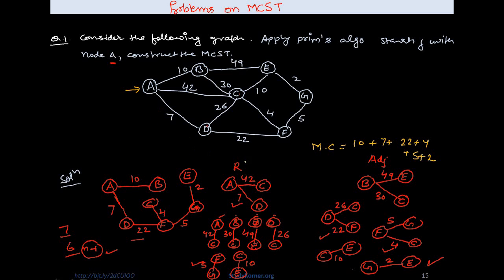In Prim's algorithm I have two sets: the remaining edges set and the adjacent vertices set. Starting with vertex A, I have three adjacent vertices B, C, and D. Among these three, the minimum cost is 10, so I consider edge A to B as the first edge in the minimum cost spanning tree. The remaining edges A to C and A to D are added to the remaining set.